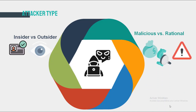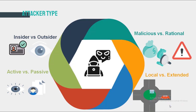Malicious versus rational: a malicious attacker doesn't look for profit and only enjoys harming the network, unlike the rational attacker who looks for profit and is more dangerous. Active versus passive: an active attacker can carry out any type of attack in the network, while the passive one only spies on communication and collects data. Local versus extended: local attacks have a restrained scope, unlike extended attacks which have the particularity of privacy violation, like wormhole attacks.